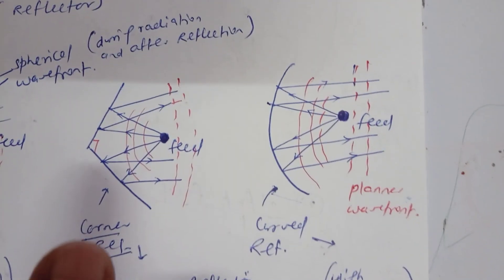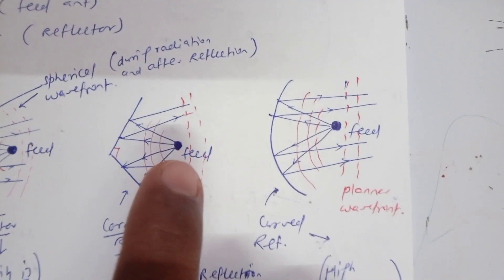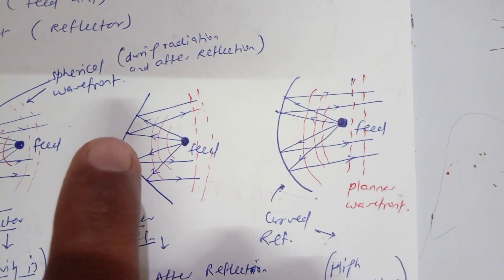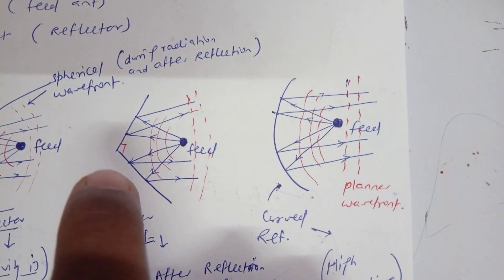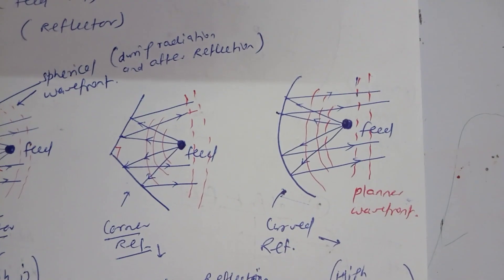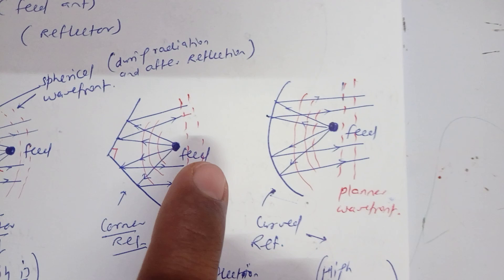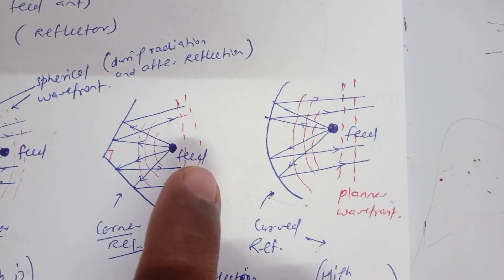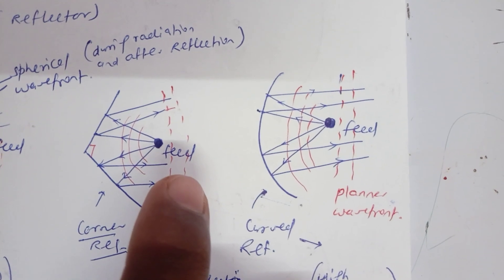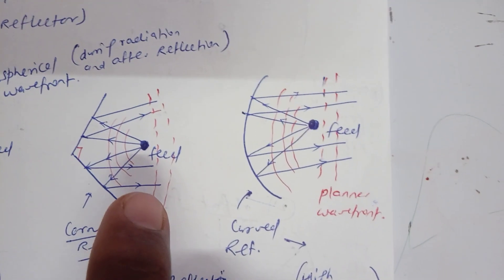In the corner reflector, whenever a signal comes from the feed antenna and reflects from the corner reflector, a spherical wavefront is produced. It is not converted into a planar wavefront, but the curvature is smaller compared to the planar reflector. So the directivity is somewhat increased.